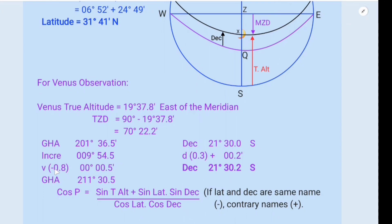v correction is -0.8, so for 0.8 is 0.5 minutes. So you add together and then you subtract this 0.5. And GHA of Venus is 211 degrees 30.5 minutes.